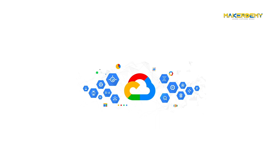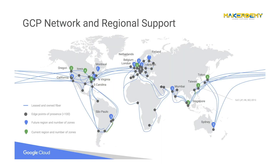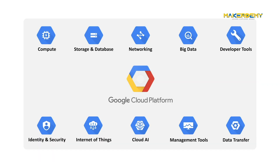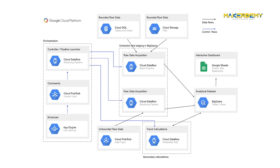GCP consists of a set of physical resources such as computers and hard disk drives, and virtual resources such as virtual machines, that are contained in Google data centers around the globe. As developers need not own or manage these physical resources, they are used over the internet as services. Services provide access to the underlying resources. When you develop your application in GCP, you can mix and match these services to provide the infrastructure you need, then add your code to tackle the scenarios you want to solve.